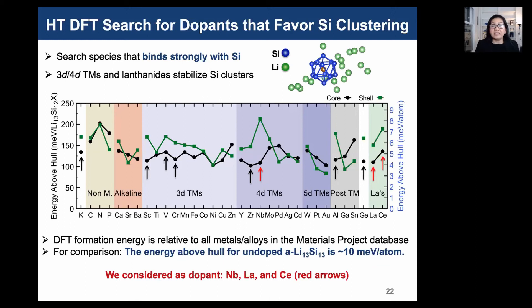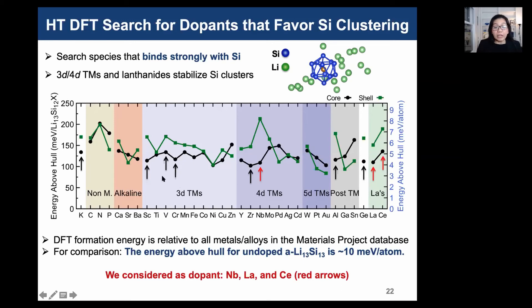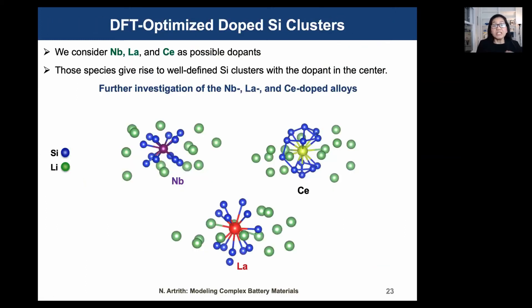We learned from NNMD simulations that silicon clustering is good for lithium transport. So we asked: are there any dopant species that bond strongly with silicon but not with lithium, and would promote silicon clustering? We performed automated DFT calculations to search for suitable dopants among 3d and 4d transition metals and lanthanide species. To assess silicon and lithium bonding, we compared energies of two types of structures — one with the dopant surrounded by silicon, the other with the dopant surrounded by lithium. From our search, niobium, lanthanum, and cerium look promising, so we investigated them further. DFT geometry optimization shows that these dopants give silicon clusters with the dopant at the center.